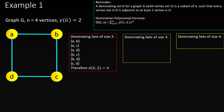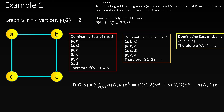The dominating sets of size three in this graph are ABC, BCD, CDA, and DAB. Since there are four of them, the coefficient on the degree-three term will be four. Finally, there's a single dominating set of size four, ABCD, meaning the coefficient on the degree-four term will be one. Now that we have our coefficients, the domination polynomial of G is 6x² + 4x³ + x⁴.